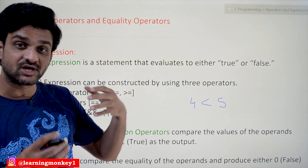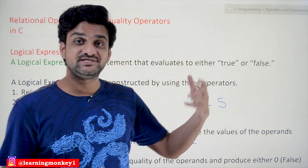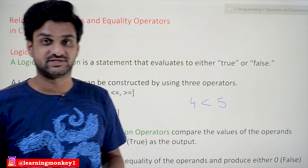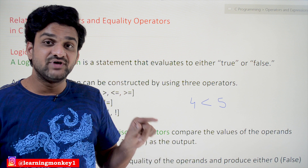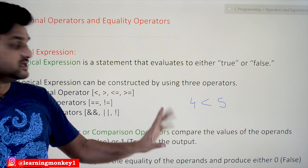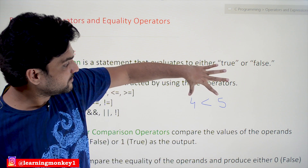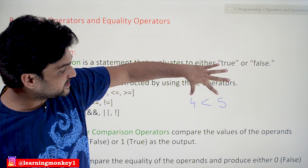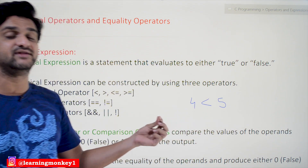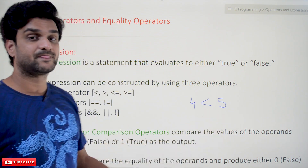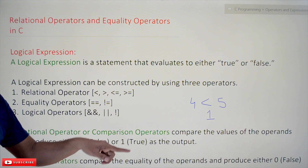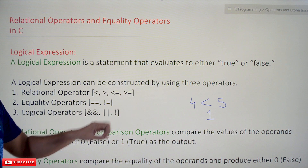This point is very important: logical expressions constructed by relational, equality, and logical operators always evaluate to either true or false. So after comparison, if the expression is true, it generates an output of 1. For example, 4 less than 5 is true, so 1 is generated as the output.